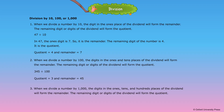Rule 3: When we divide a number by 1000, the digits in the ones, tens, and hundreds places of the dividend will form the remainder, and the remaining digit or digits will form the quotient. For example, 3,456 divided by 1000: quotient is equal to 3 and remainder is equal to 456.